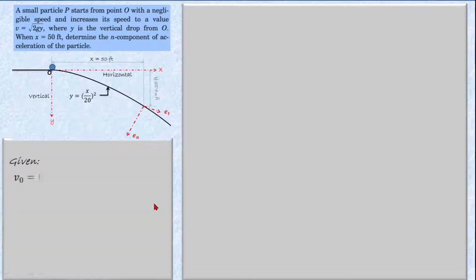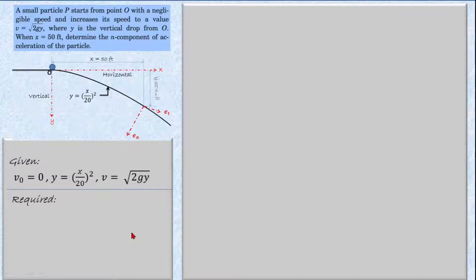Let's state the given information first. The initial velocity is zero, the path position is given as y = (x/20)², and the velocity is given as a function of gravity and y, that is v = √(2gy). The required goal is to evaluate the normal acceleration when the particle reaches x = 50 feet.